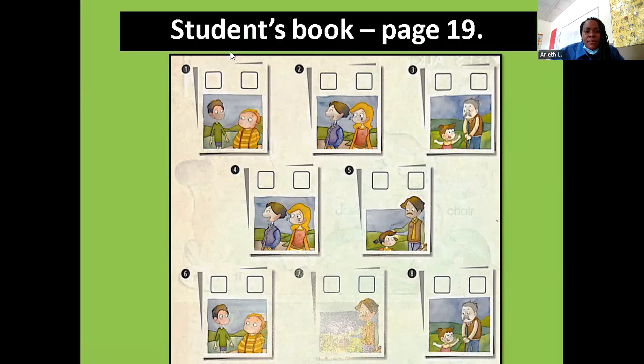For example, number one. Number one: chubby. Number one chubby, he is chubby. Check. We have thin, we have chubby, and we have pink. We have chubby.